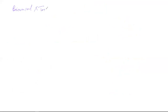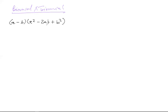This is the last thing we'll do in this video. Suppose I have (a − b) and I want to multiply it by a² minus 2ab plus b². What does this simplify to? You have to use FOIL — it's tedious, but you must multiply each term in the first bracket by every term in the second bracket.